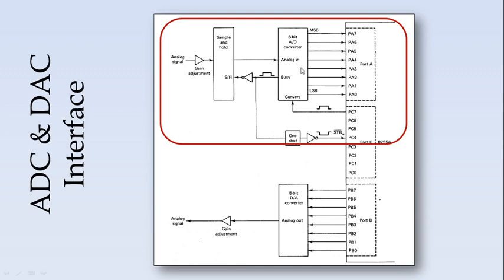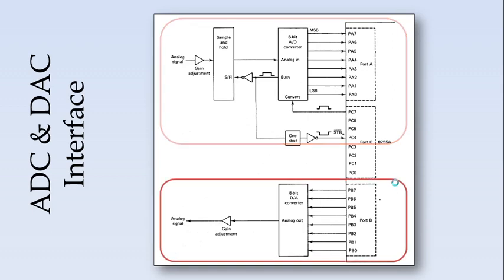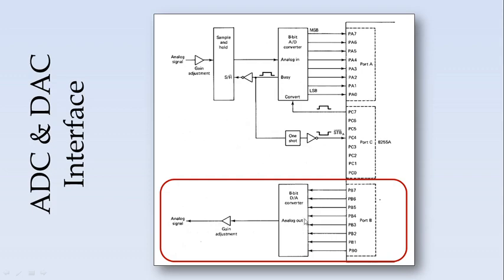This is a one-shot. This section indicates the ADC interface section, whereas Port B is connected in this example to a Digital to Analog Converter.